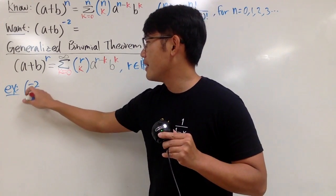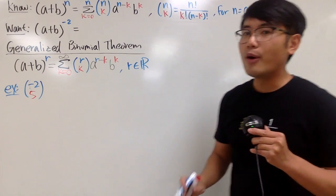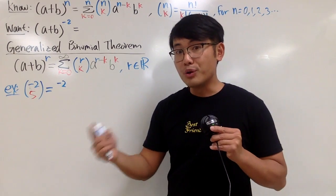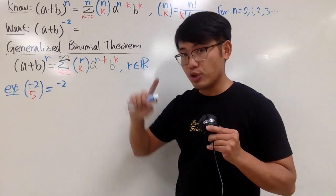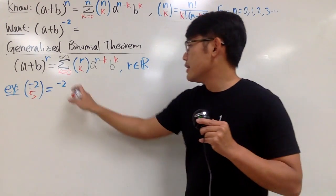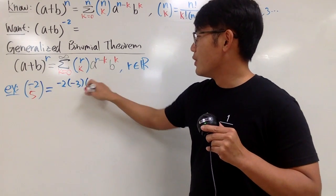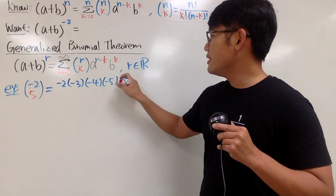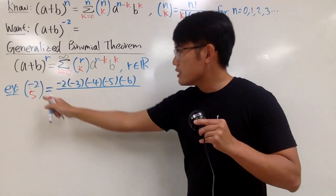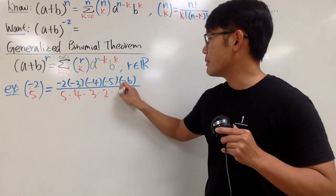Let's compute negative 2 choose 5. We start from negative 2 and go down four more times, because we need five numbers: negative 2, negative 3, negative 4, negative 5, negative 6. Then we divide by 5 factorial, which is 5 × 4 × 3 × 2 × 1. After cancellation, the top gives us five negative signs, and you get negative 6.